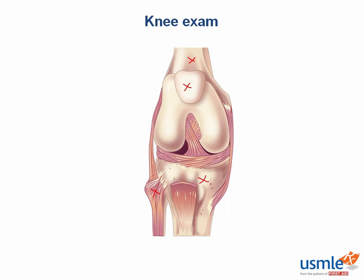How can you remember which one is the ACL and which one is the PCL? The A and P in ACL and PCL refer to where they attach on the tibia. You can tell in this picture that the structure out in front is the ACL, as it's attached anteriorly on the tibia. And what is tucked behind it, crossing to the posterior tibial attachment? That's right, the PCL.